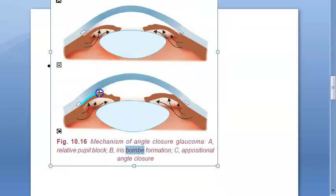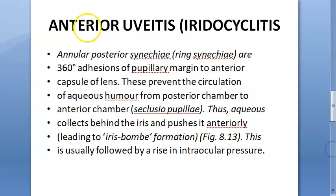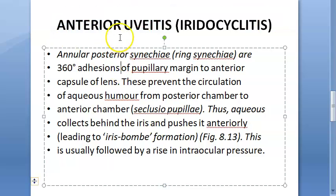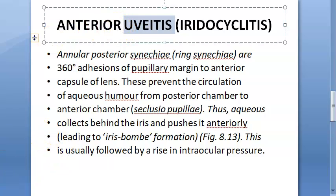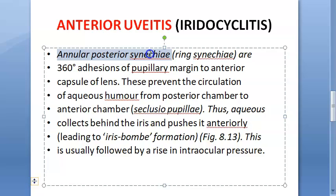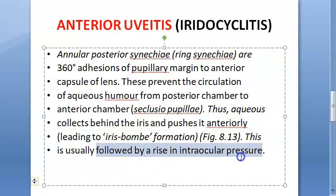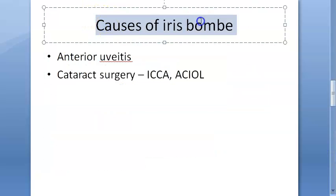Because of this iris bulging, the angle gets closed, leading to angle closure glaucoma. Iris bombay occurs due to anterior uveitis or iridocyclitis — inflammation of the uveal tissue, specifically the iris and pars plicata. This anterior uveitis causes annular posterior synechia (ring synechia), called seclusio pupillae. It prevents circulation of aqueous humor from the posterior chamber to the anterior chamber; the aqueous collects behind the iris, pushes it anteriorly forming iris bombay, and causes a rise in intraocular pressure as the angle closes.